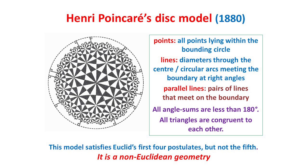But very strangely, in this geometry, all of these triangles are congruent to one another — and that certainly doesn't happen in Euclidean geometry, where two triangles can be similar, having the same shape, without being congruent, having the same size. But this geometry does do what was required of it: it satisfies all of Euclid's first four postulates, but not the fifth one. It is, in fact, a true non-Euclidean geometry. Thank you for listening.